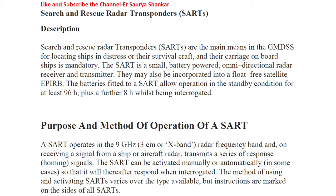In GMDSS, the SART is the main means of locating a ship in distress or their survival craft, and carriage on board ship is mandatory. The SART is a small battery-powered omnidirectional radar receiver and transmitter, similar to the EPIRB. It may also be incorporated into a float-free satellite EPIRB. The battery fitted to a SART allows operation in standby condition for at least 96 hours, plus a further 8 hours whilst being interrogated.